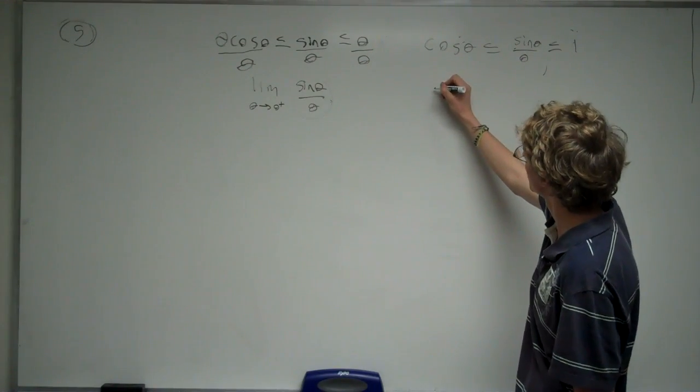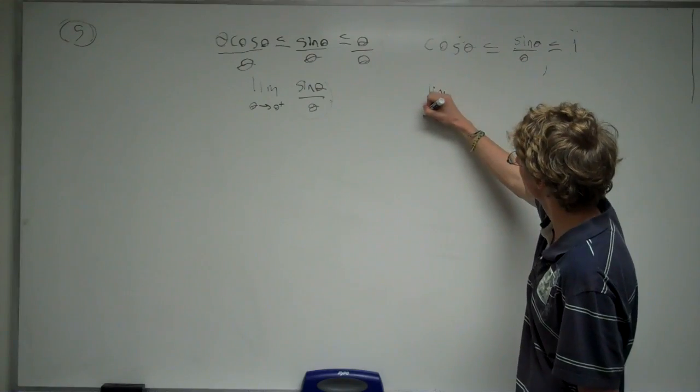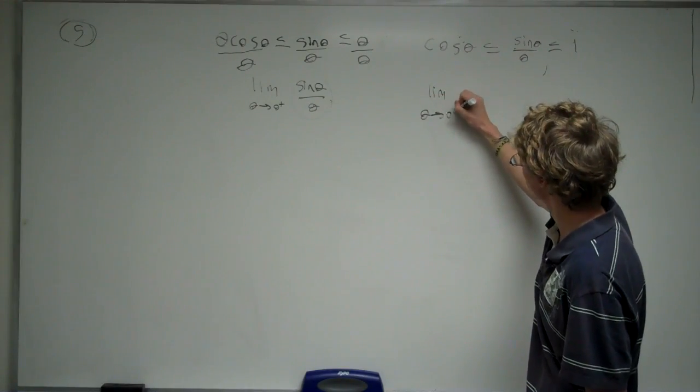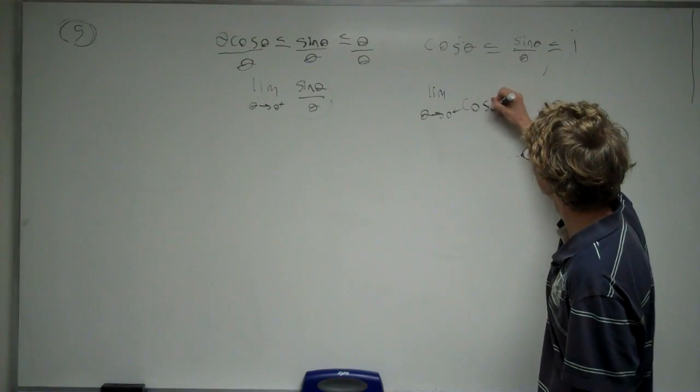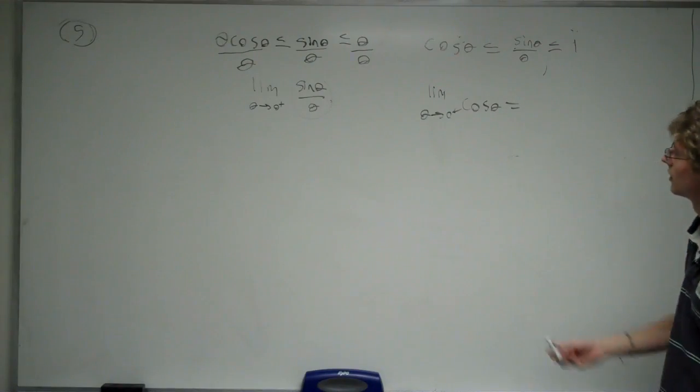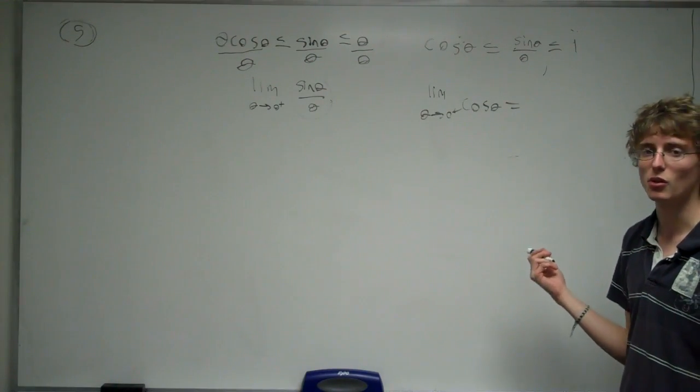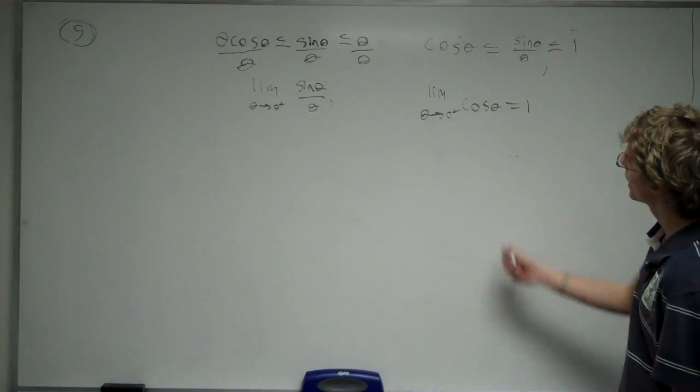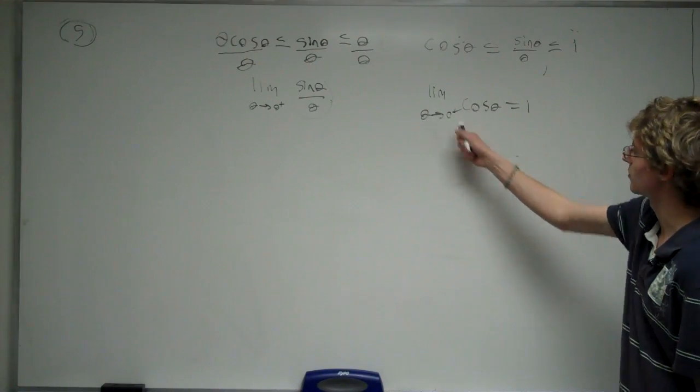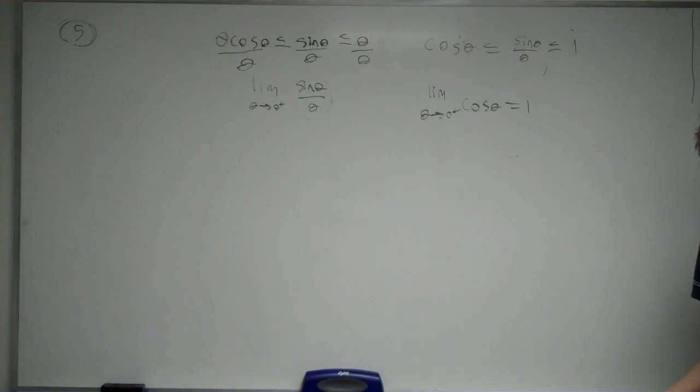So the limit as theta approaches 0 from the right of cosine theta, well, we can just plug in 0 for theta, and that's going to give us cosine of 0, which is 1. And then the limit as theta approaches 0 from the right of 1 is just going to be 1.